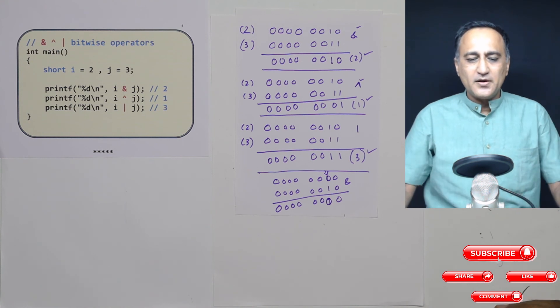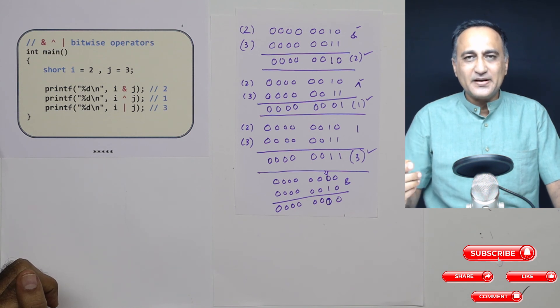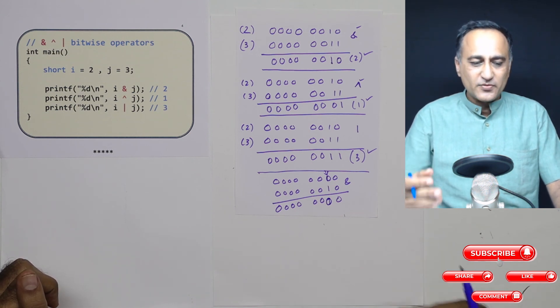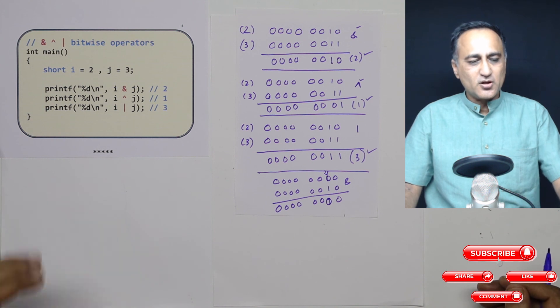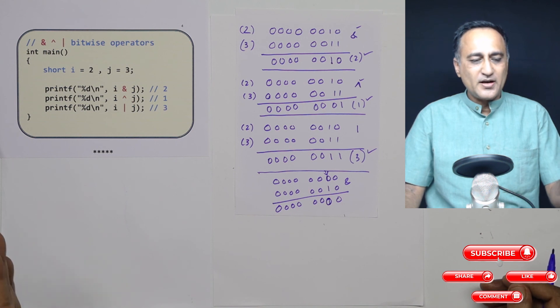As you head to deep C programming and bitwise, you will do something called set a bit, clear a bit, AND a bit, OR a bit. That's when you will use it. So this should give you an idea about the functioning of the bitwise operators which are AND, XOR, and OR.